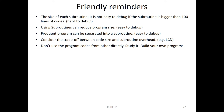Keep subroutines to no more than about 100 lines — longer than that is very hard to debug. Use subroutines to reduce program size, and compare the performance and the size. Try to optimize both. If you perform a frequent action, put it in a subroutine.